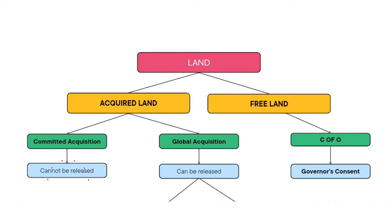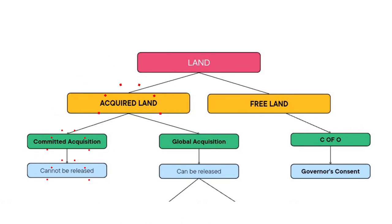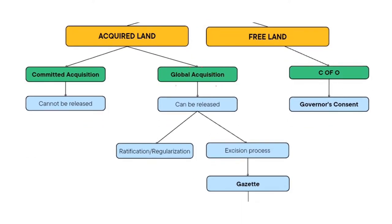If it is committed, the government will never let go of its plan in order to fulfill your personal desire. The government must build roads, schools, and hospitals, and these committed lands are reserved for these public infrastructures. However, if the land under government acquisition is a global acquisition, then there's good news — this land can be released to the individual through two processes: ratification or regularization. Ratification simply means after you buy the land from the indigenous owners, you also pay the government to release the land to you. So you are paying for the land twice in ratification.